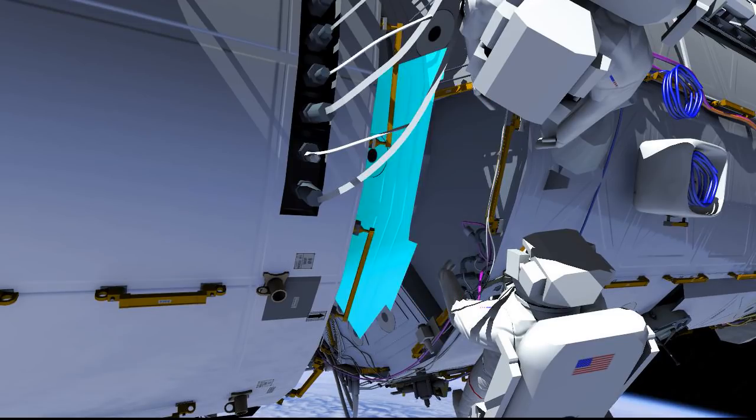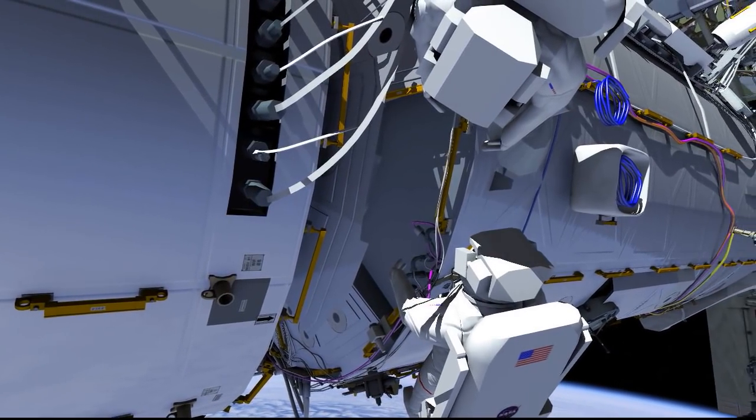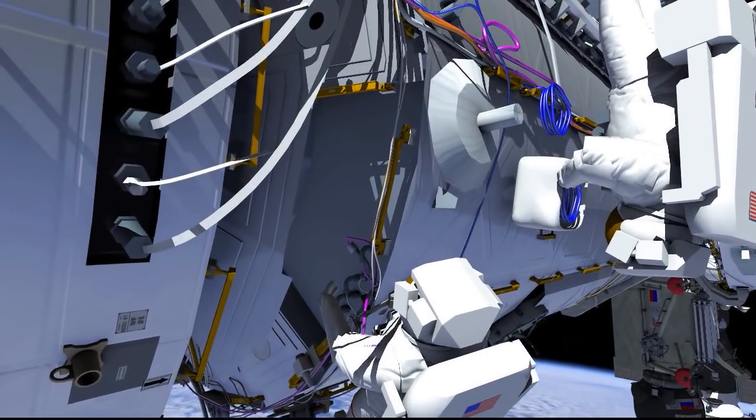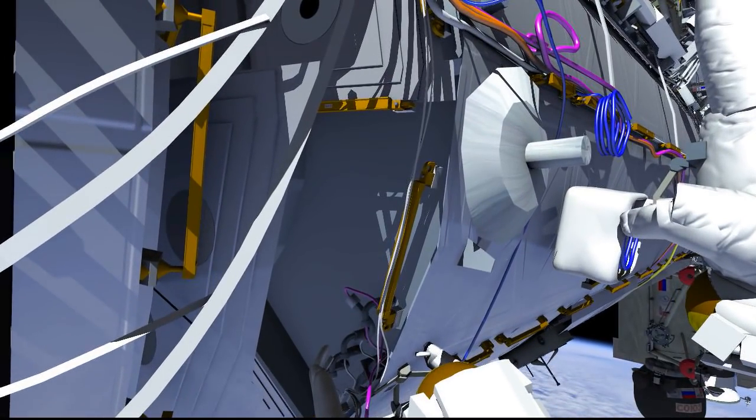Once that's complete, they can access that shield and get underneath to connect an Ethernet cable that will be utilized to route to various parts of the truss for future wireless Ethernet connections. This will spread wireless Ethernet connectivity to payloads on the outside of the International Space Station.